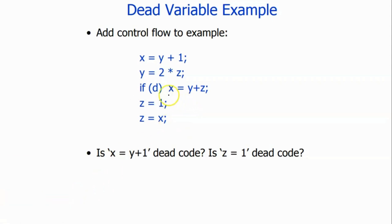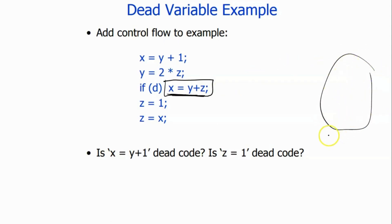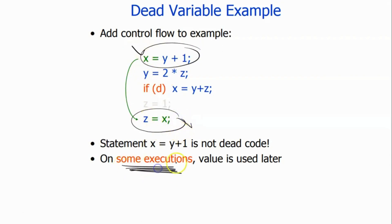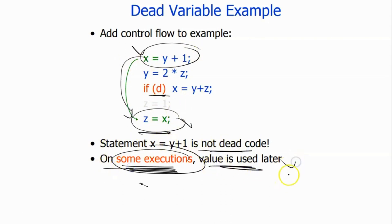Can we say this other instruction is dead code? No. Maybe in some execution the condition d becomes true, and then this definition will be used. Similarly, another instruction is also not dead code because it might happen that d becomes true and the definition will be used. On some execution the value is used later, so that's why these are not dead code.